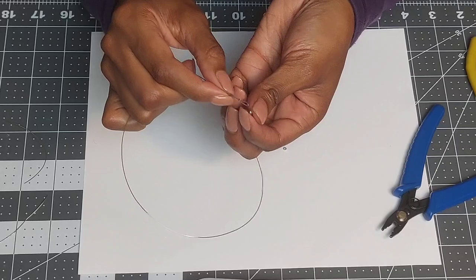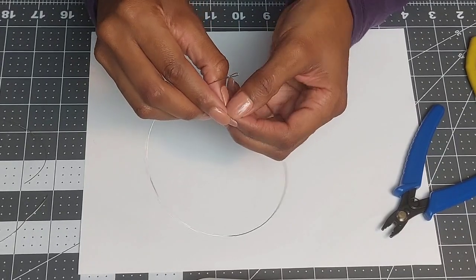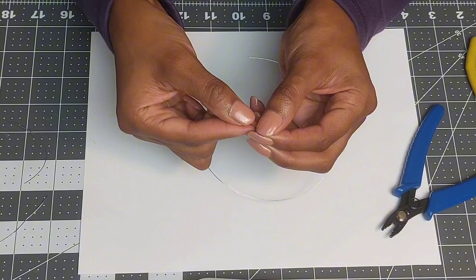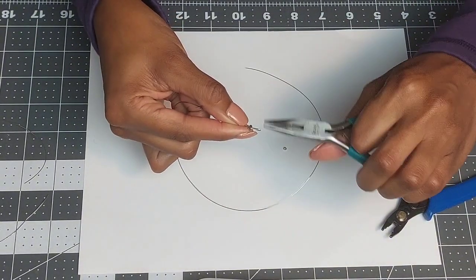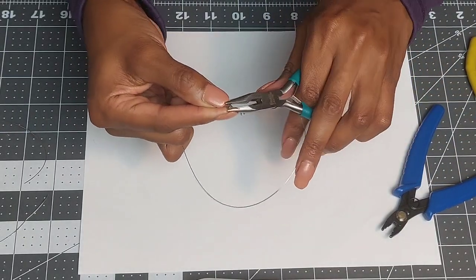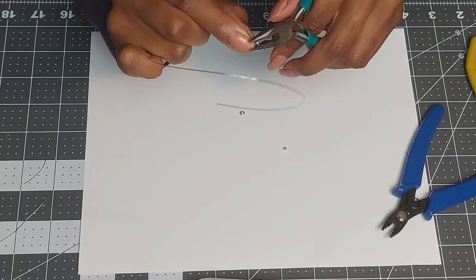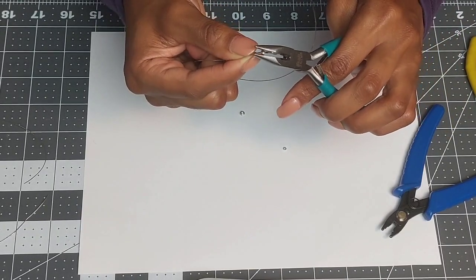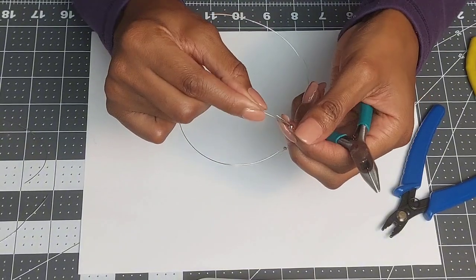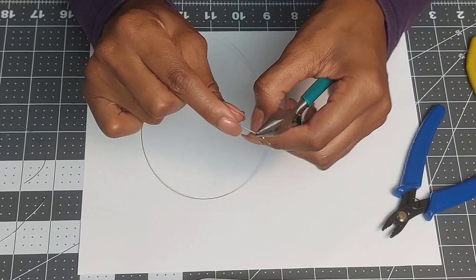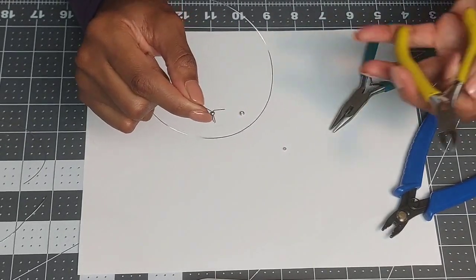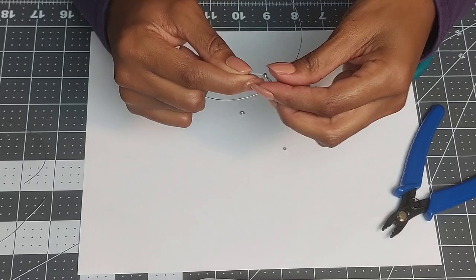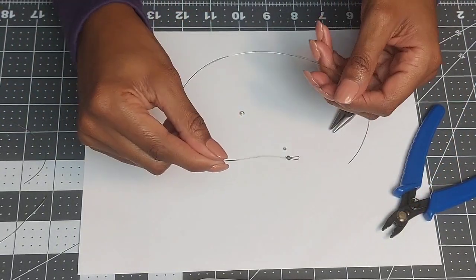So you're going to take a crimp cover and cover up the crimp bead because we don't want that to be an eyesore on the bracelet. And once you've got it placed around the crimp bead, use some pliers to close the cover around it. You may have to maneuver, shape it up a little bit. All right and then once you have the crimp bead closed around there you can cut off the excess wire with your flush cutter pliers.